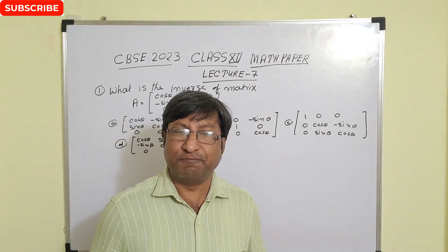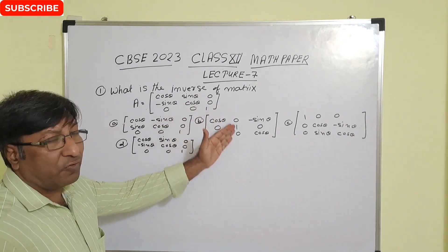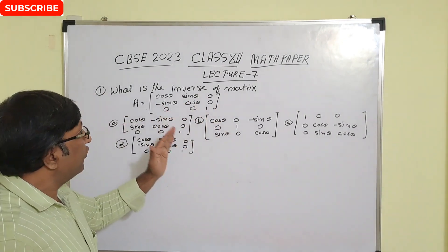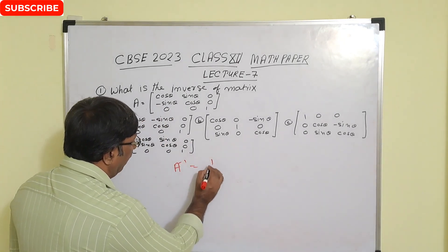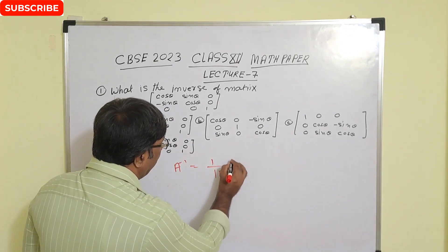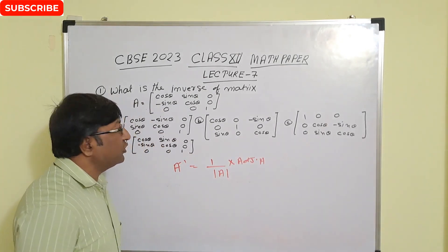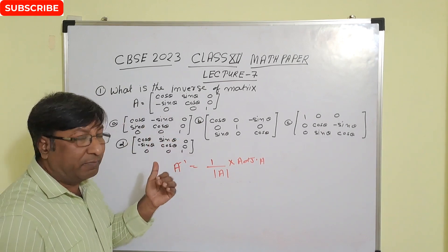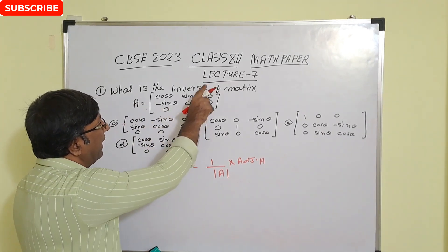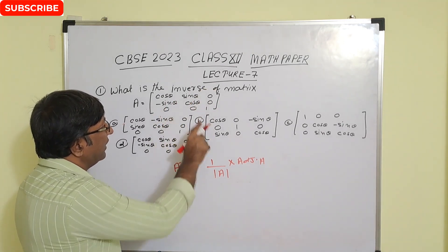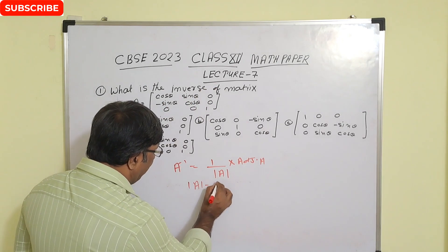Most important question of matrix. The question is: what is the inverse of matrix A? We know inverse of A equals 1 upon determinant of A multiplied by adjoint of A. First find the determinant. In the third row, the maximum number of zeros are present, so expand along the third row. Third row, third column gives cos²θ + sin²θ = 1. So determinant of A equals 1.